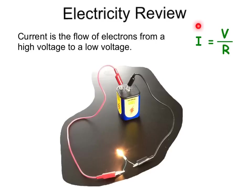Here we see a light bulb or resistor attached to a battery that supplies our voltage difference. Here a current flows from this high voltage around our circuit down to a lower voltage.